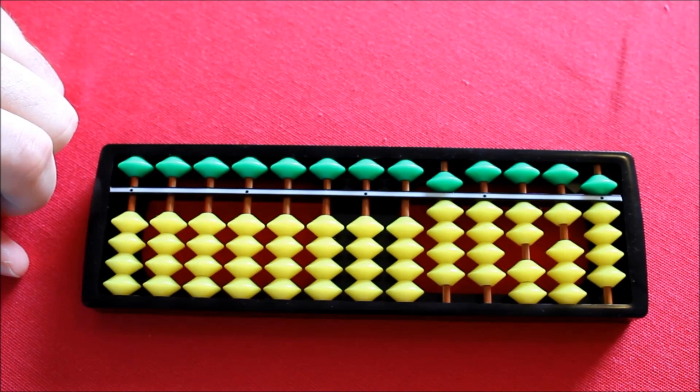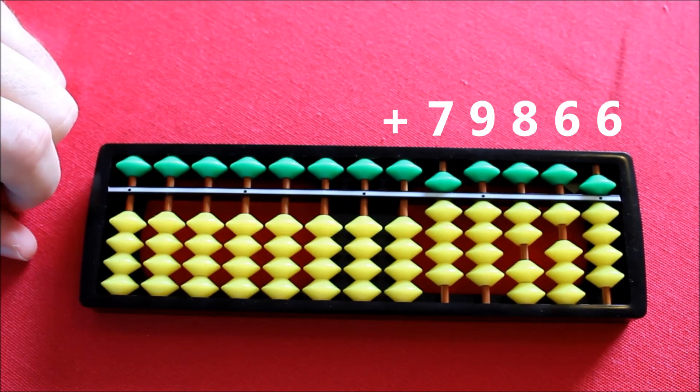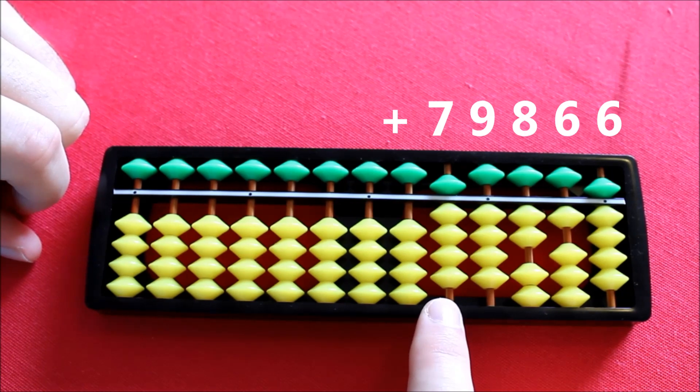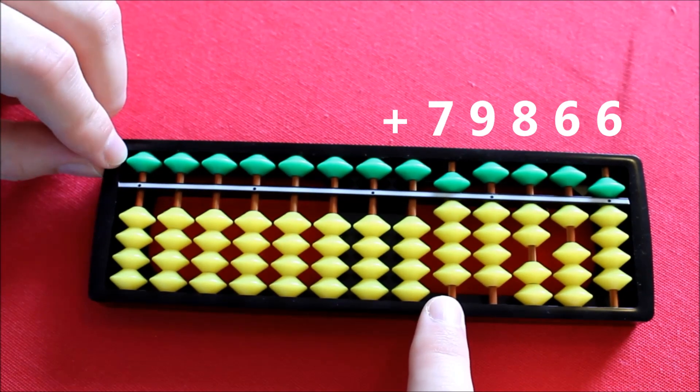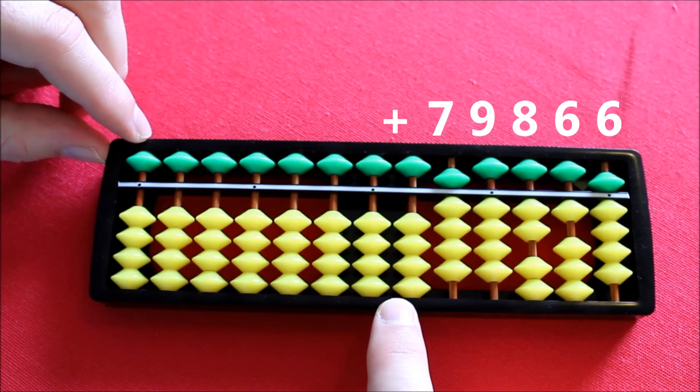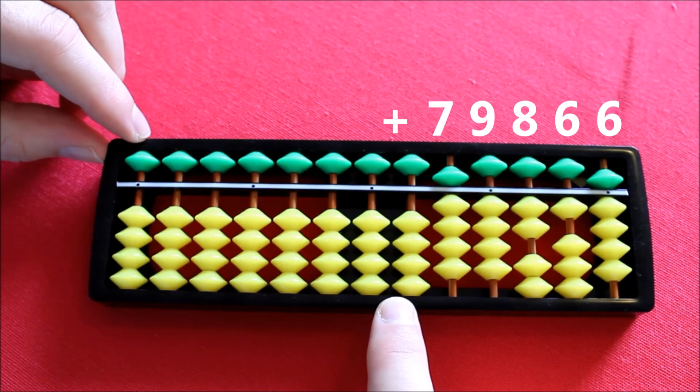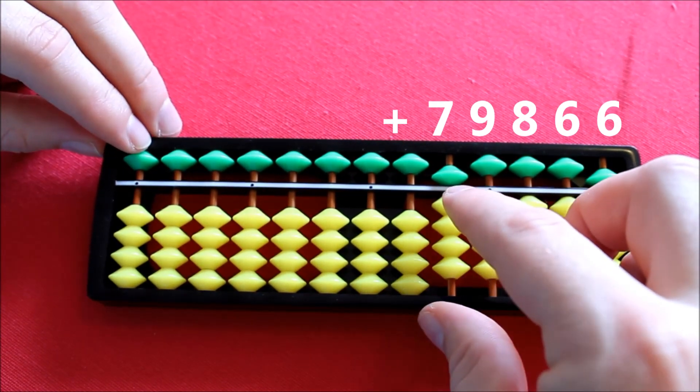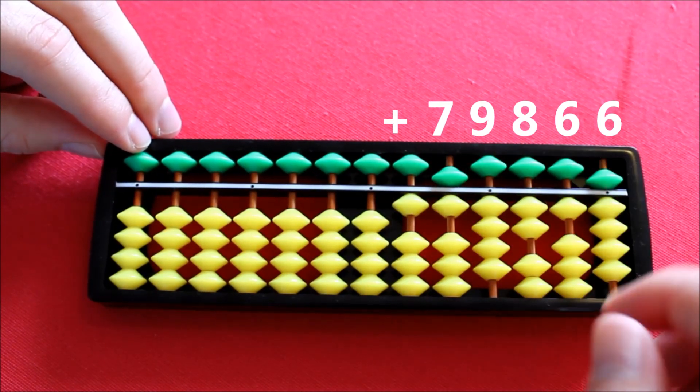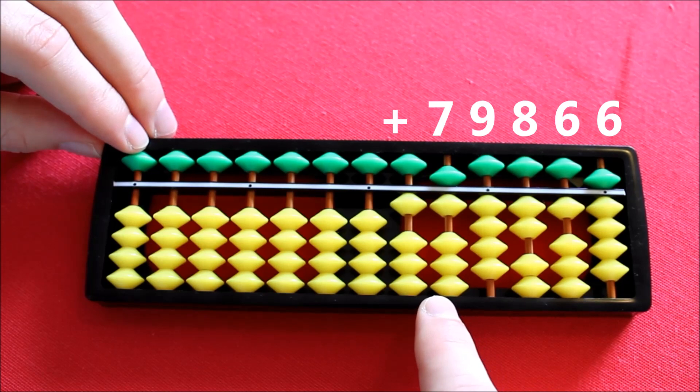So firstly, we're going to be adding 7 to this column here. We can't do it directly because we haven't got enough beads available. So we're going to have to add 1 to this column here, which will be adding 10. And that's 3 more than the 7 that we wish to add. So firstly, I subtract 3. Then I add my 10, which is adding 1 to that column. And there we have added by 7.